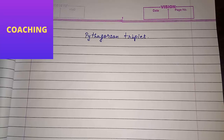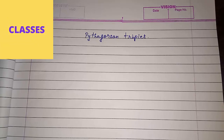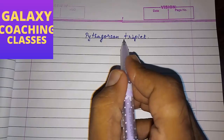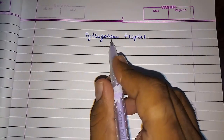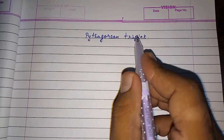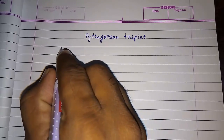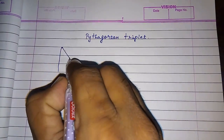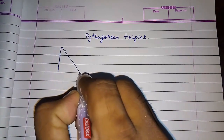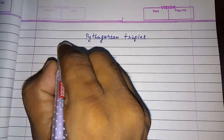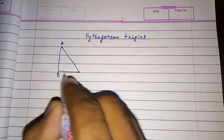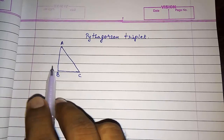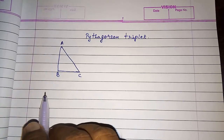Hello friends, today we are going to study about Pythagorean triplets. Pythagorean triplet means it is something related to Pythagoras. In a right angle triangle, if two sides are given to you, you can find the third side with the help of Pythagoras.